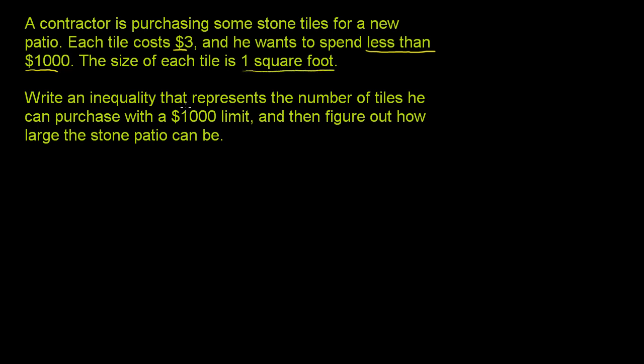Write an inequality that represents the number of tiles he can purchase with a $1,000 limit, and then figure out how large the stone patio can be. So let x equal the number of tiles purchased.